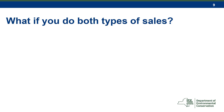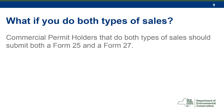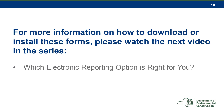What if a commercial permit holder both imports or manufactures restricted-use pesticides and sells pesticides to certified private applicators? Commercial permit holders that do both types of sales should submit both a Form 25 and a Form 27. For more information on how to download or install these forms, please watch the next video in the series: which electronic reporting option is right for you?